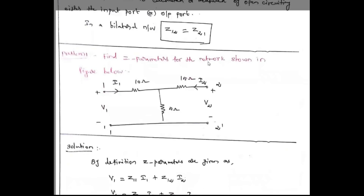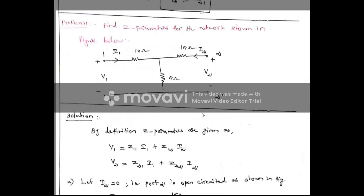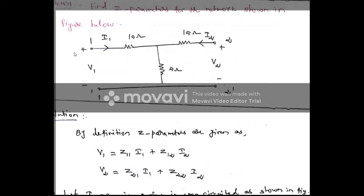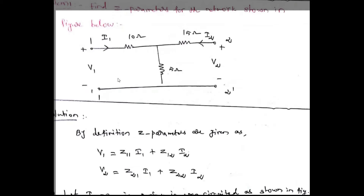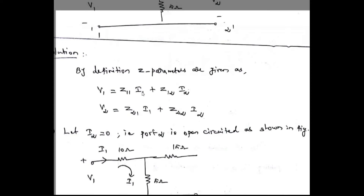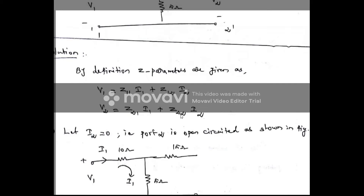The second problem (May 2018 exam question): find the Z parameters for a circuit with a dependent current source. Mark the four variables V1, I1, V2, I2. There are three loops — let I3 be the current in the center loop. The dependent current source value is 3·I1, and it satisfies: 3·I1 = I2 + I3, so I3 = 3·I1 − I2 (equation 1).